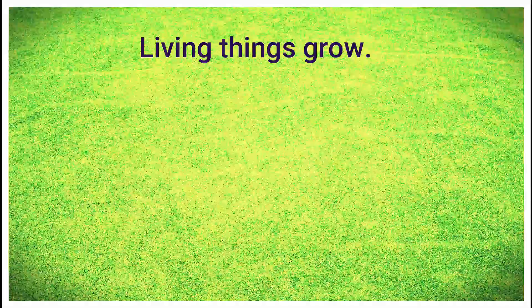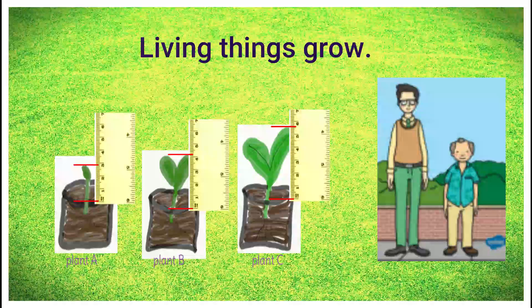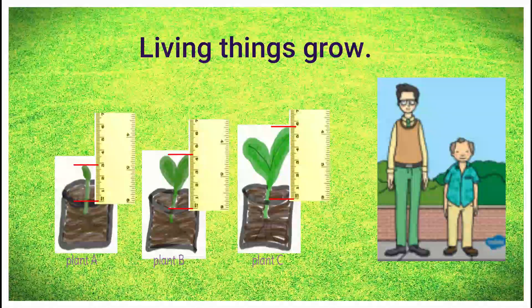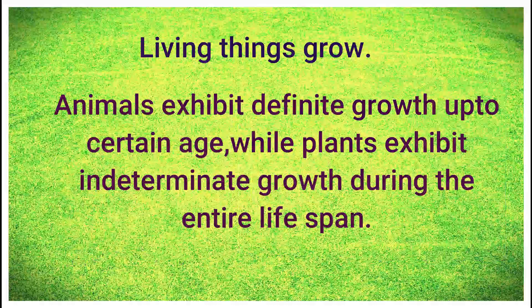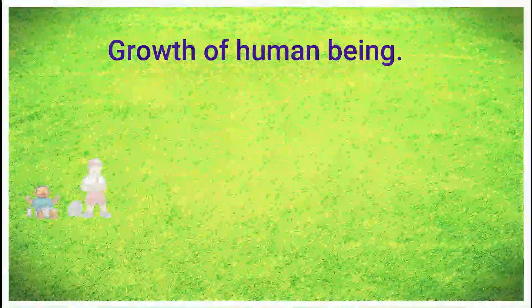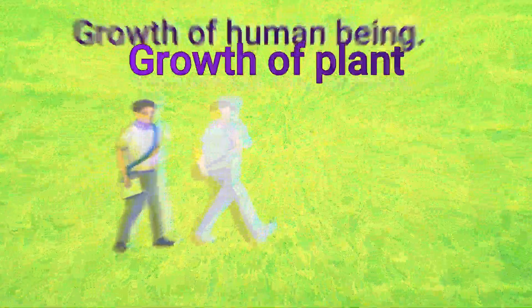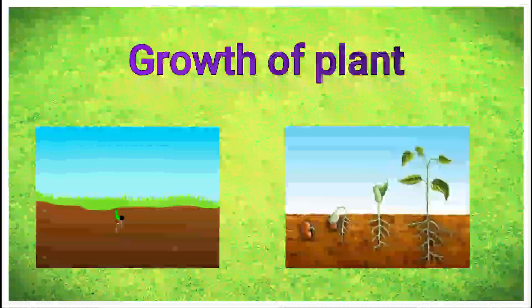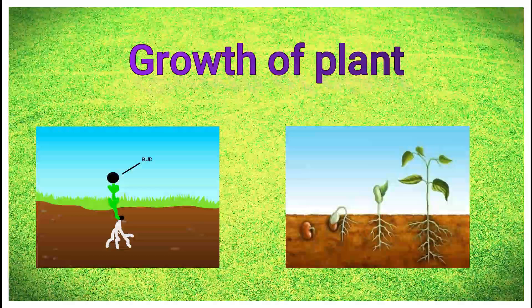Living things can grow. Growth is one of the characteristic features of living things — it grows in size, height, and weight. Growth varies in plants and in animals. Animals exhibit definite growth up to a certain age only, while plants exhibit indeterminate growth during their entire life span.